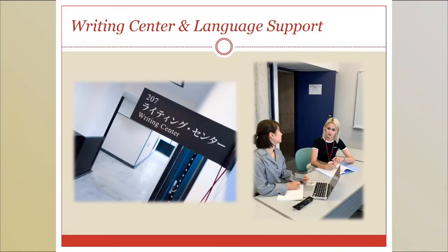Next is the Writing Centre, located on the 2nd floor of Building 3 on Waseda campus. Learning how to write an academic paper is a very important skill, and the Writing Centre is there to help students develop their English writing skills. If you have any doubts or questions about your writing, please make an appointment with them. They provide guidance in English, Chinese, and Japanese on writing English papers. The School of Social Sciences also provides its own language support services, where teaching assistants can help with academic writing, speaking, and listening.